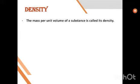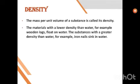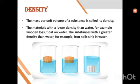The next property is density. What is density? The mass per unit volume of a substance is called its density. Materials with a lower density than water — for example, wooden logs — will float on water. Whereas substances with a greater density will sink. For example, take an iron nail or a coin and try to dip it in water — it will automatically sink, because its density is greater than that of water.